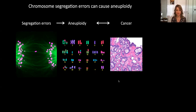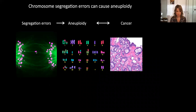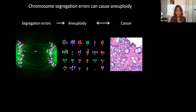To make it more concrete, this is how a segregation error looks. These are the bridging microtubules of the mitotic spindle, these are the kinetochores in pink, and this is one kinetochore that is lagging behind the others. It may end up in a wrong cell, so that one cell gets both copies of this kinetochore and the other gets zero — this is very bad.